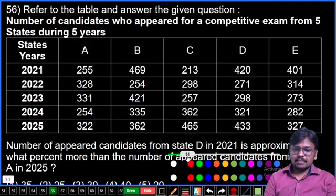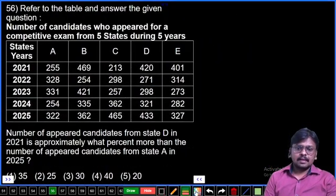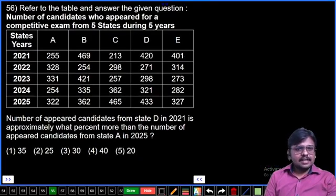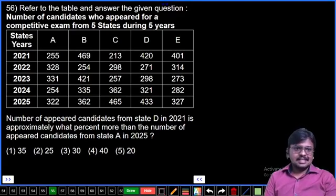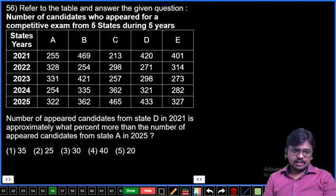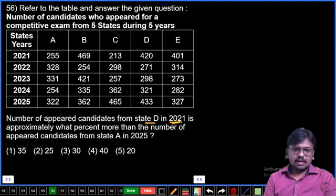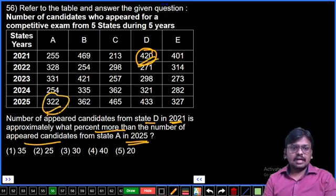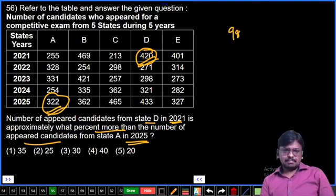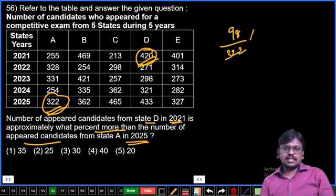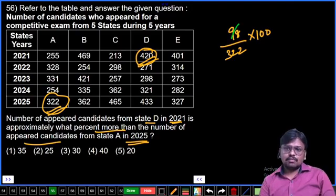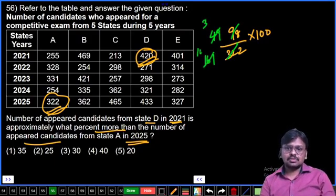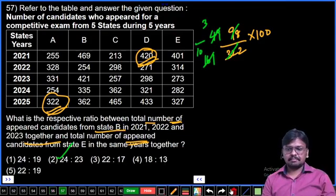Question 56: Here we have a tabular column with data interpretation questions. The table shows number of candidates who appeared for a competitive exam from five states during five years, states A through E, years 2021 to 2025. Question 56: Number of appeared candidates from state D in 2021 and E in 2021 together is approximately what percent more than state A in 2025? State D 2021: 400, E 2021: 200, total 600. State A 2025: 362. Percentage: approximately 66%, which is close to 69%. Third option.